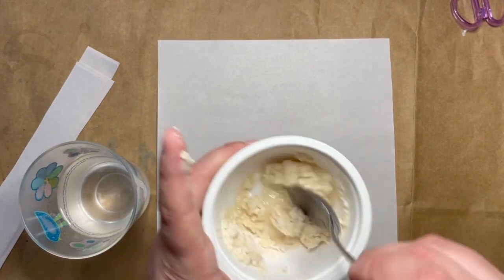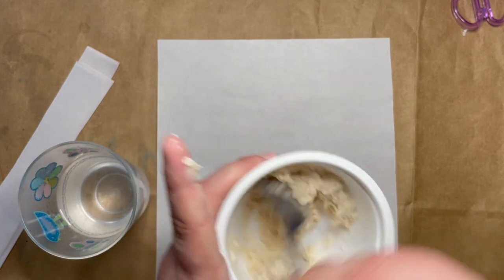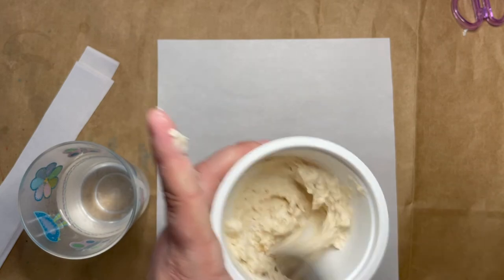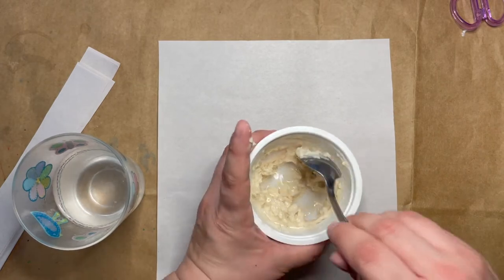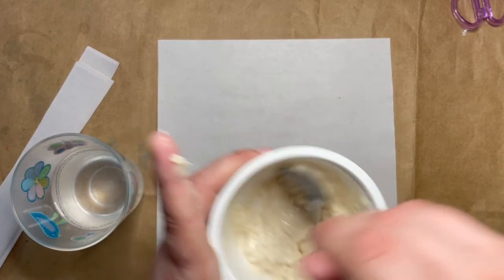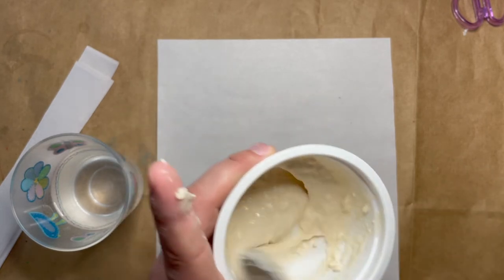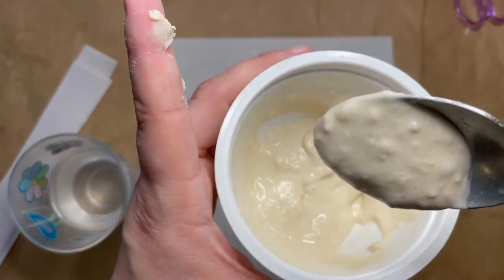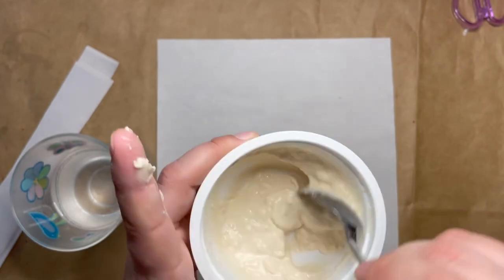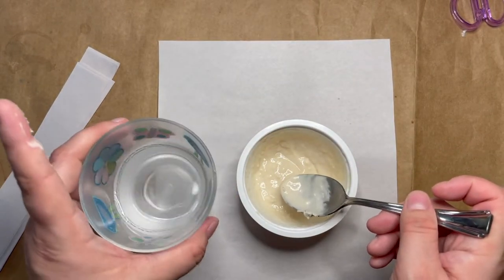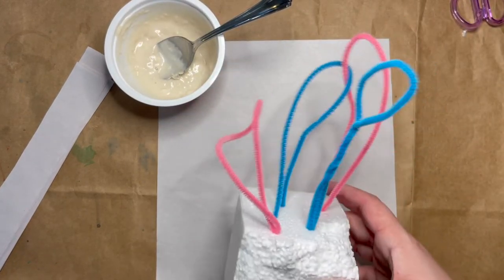So I'll just keep adding spoonfuls of water until I get a consistency that is sort of like a paste. You want something that's sort of like yogurt. Yogurt is thicker than water but it is not a solid. Like if you put it on your spoon it can plop off your spoon. So I'll just keep adding little bits of water until I get something that is sort of a yogurt-like consistency. That looks pretty good. Do you see how it plops off my spoon? But it's thicker than the water is.